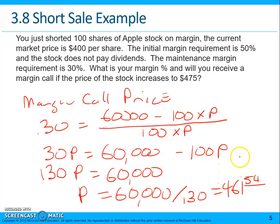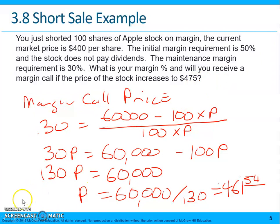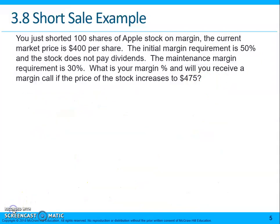So if the price increases to $475, you would receive a margin call, since $475 is above the margin call price of $461.54. The final part of the question asks what your margin percent is at $475 per share.